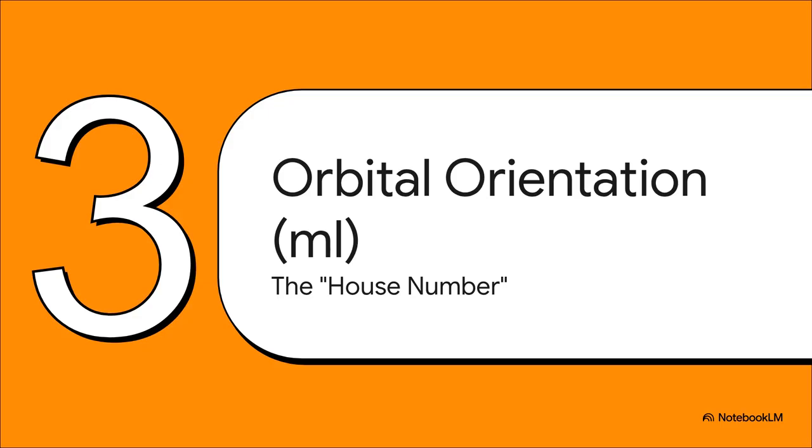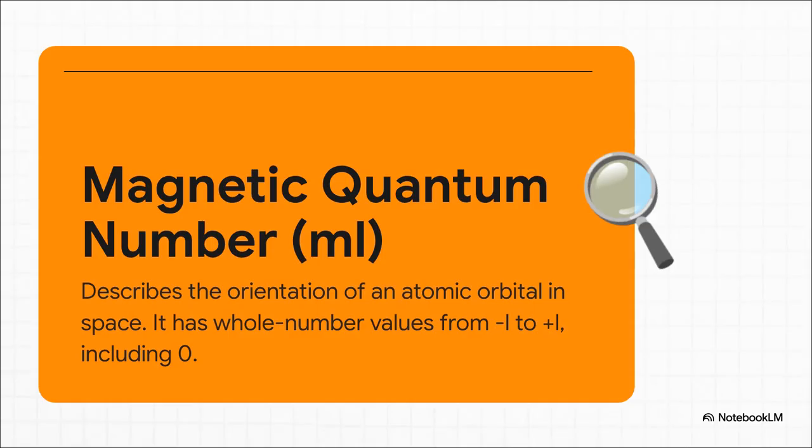Okay, we've got our city and the design of our street. But, you know, a street can run in a few different directions, and it has lots of houses. So now we need a specific house number. This brings us to our third quantum number, which tells us how that orbital shape is actually pointing in 3D space.